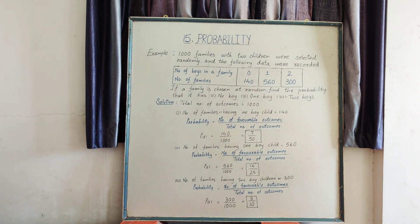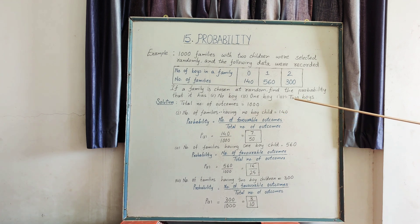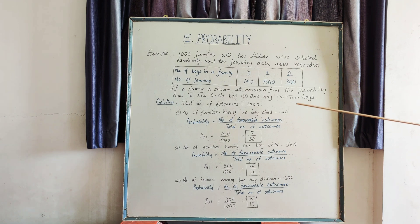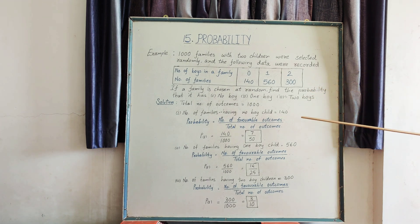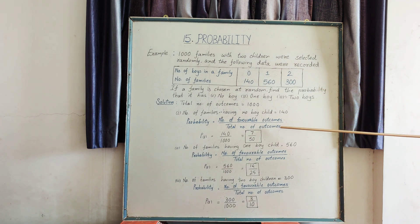Let's find the solution. The total number of outcomes is 1000, since we selected 1000 families. For the first question — the probability of a family having no boy child — the number of families having no boy child is 140. Using the formula: probability equals number of favorable outcomes upon total number of outcomes, the probability of no boy child equals 140 upon 1000, which is equal to 7 upon 50.